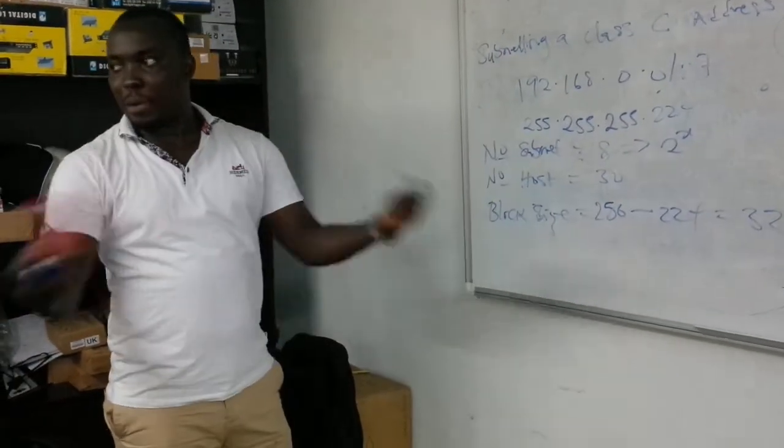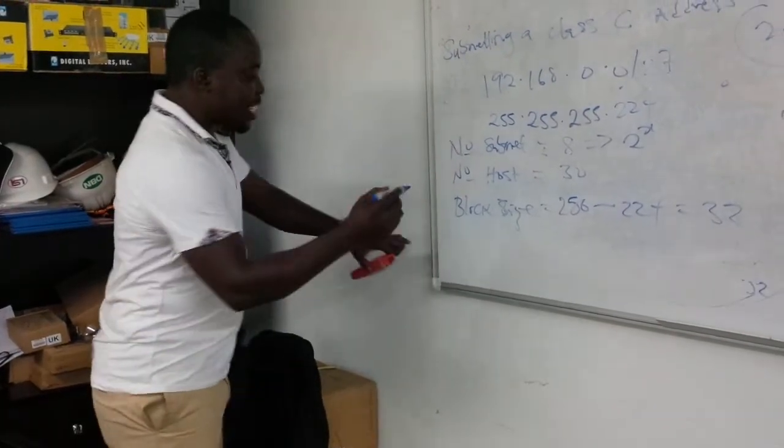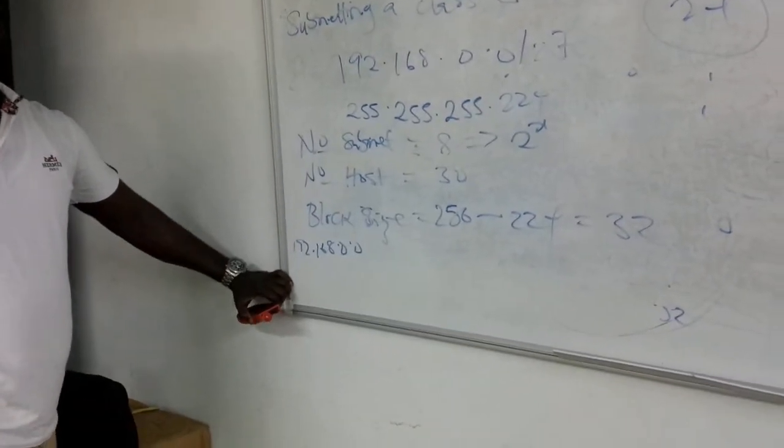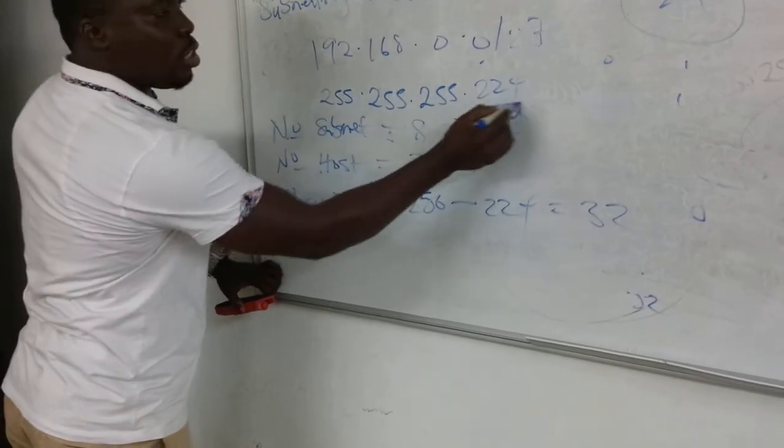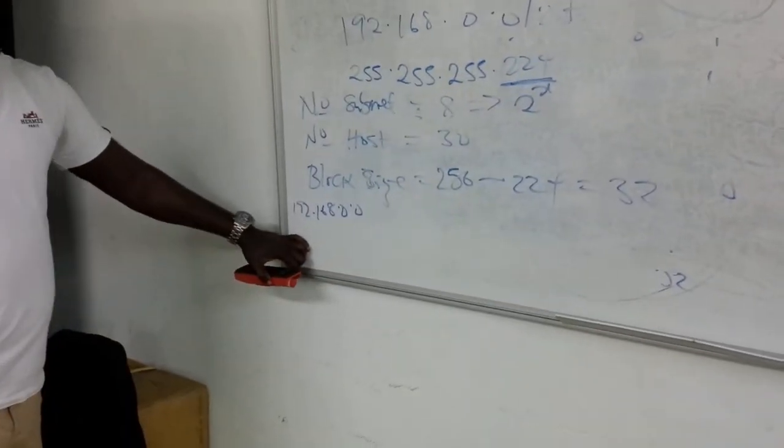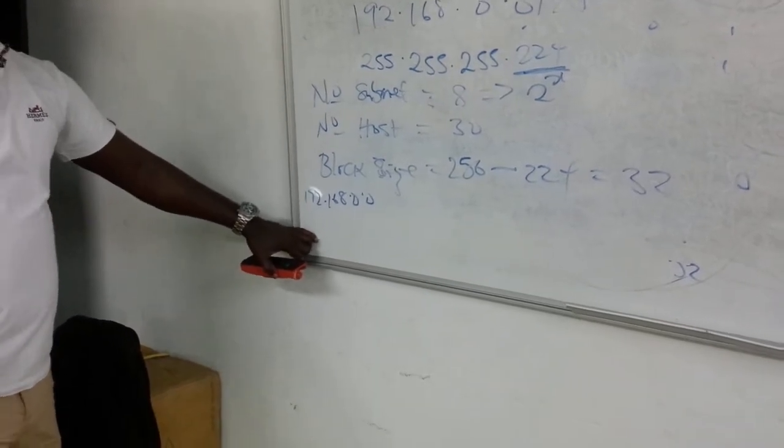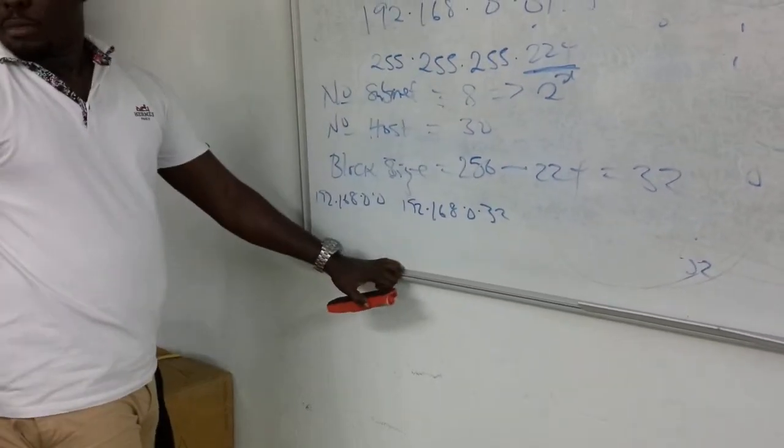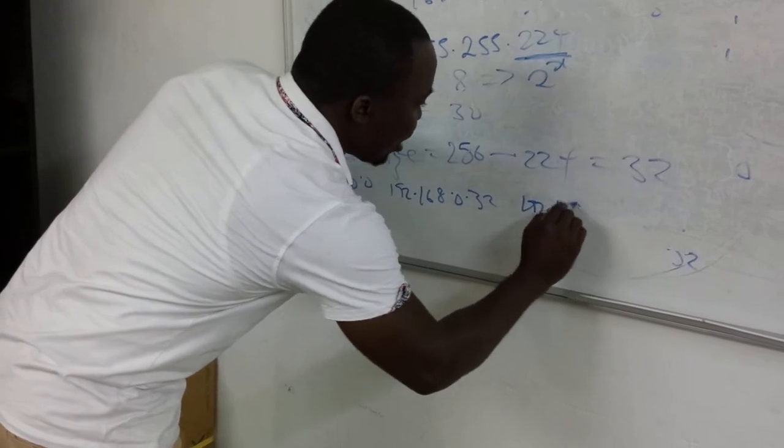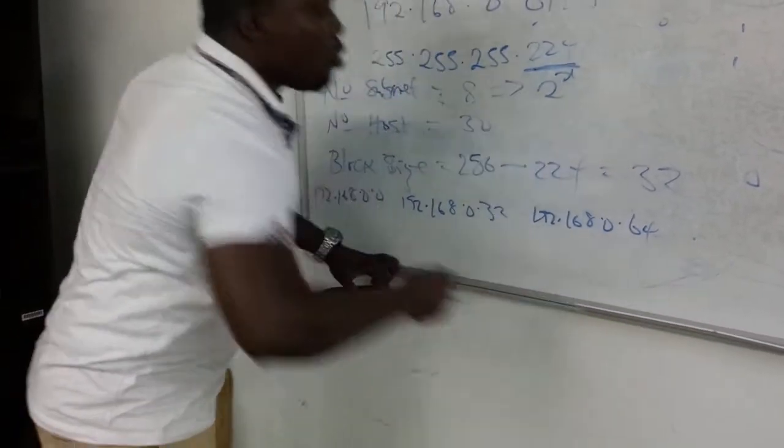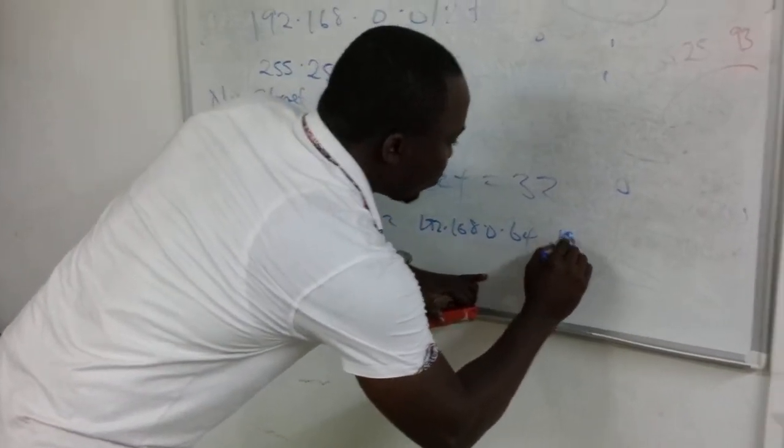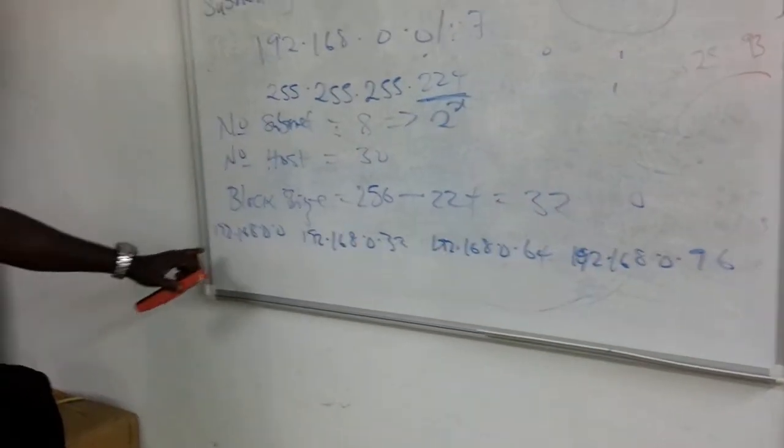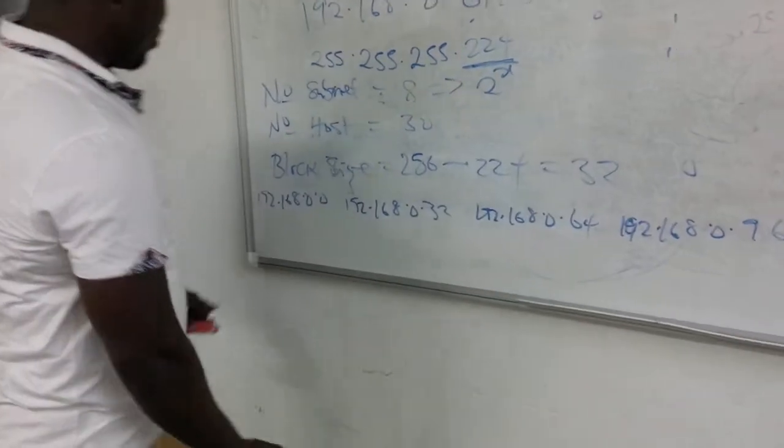Now for us to list out our networks. We are done. Given block size of 32, the first network is 192.168.0.0. You must start from zero. And when you're doing this, you must note where the subnet occurred. The subnet bit falls into the last octet. So that's where the change is going to occur in increments of 32. So the second network is 192.168.0.32.